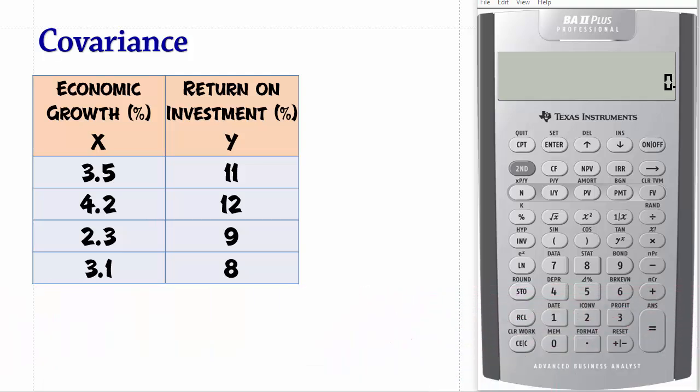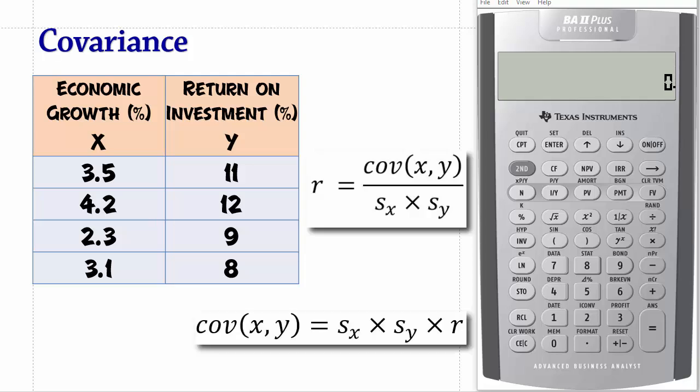Since the correlation coefficient R is covariance divided by the product of the standard deviations of X and Y, then the covariance is the standard deviation of X times the standard deviation of Y times R.